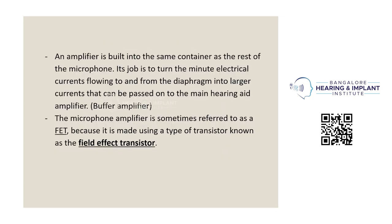An amplifier is built in the same container as the microphone. Its job is to turn the minute electrical currents flowing from the diaphragm into larger currents that can be passed on to the main hearing aid amplifier. The microphone amplifier is sometimes referred to as a FET because it was made using a type of transistor known as a field-effect transistor.